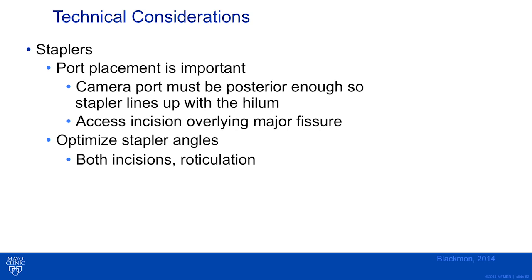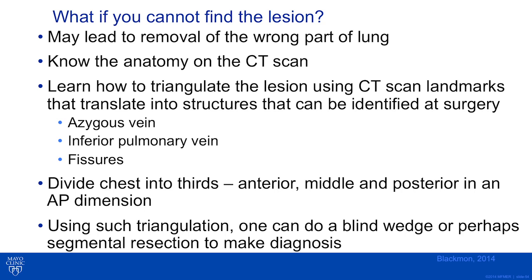What if you cannot find a lesion? This may lead to removal of the wrong portion of the lung. Know the CT scan anatomy and learn to triangulate the lesion using CT-guided landmarks. Options include injection of methylene blue from electromagnetic navigational bronchoscopy, a fiducial marker, injection of radionuclide tracer, or anatomic landmarks such as the azygous vein, inferior pulmonary vein, or fissures. You can divide the chest into thirds — anterior, middle, and posterior — in the AP dimension. Such triangulation can allow for a blind wedge or segmental resection to make a diagnosis.